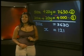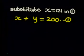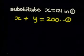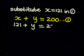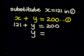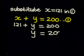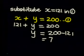Now, we can find the number of 20 Rand notes, the Y value. I can find Y by substituting X equals 121 into equation 1. I get 121 plus Y is equal to 200. To solve for Y, I get Y is equal to 200 minus 121 and that gives me 79.